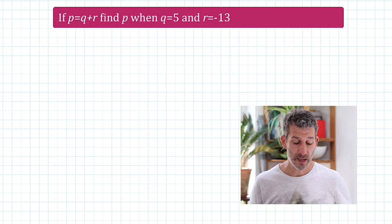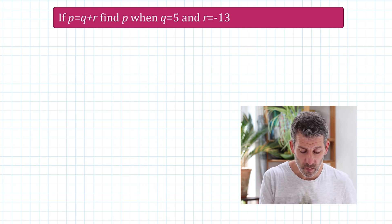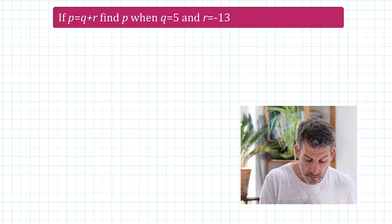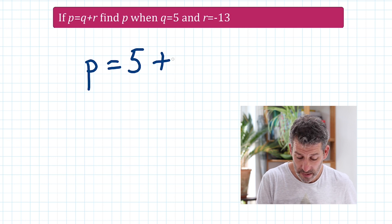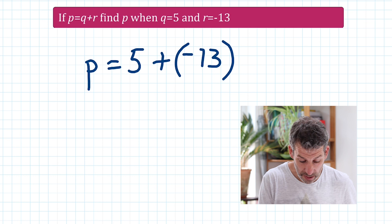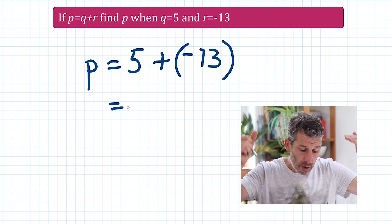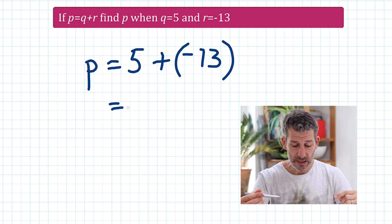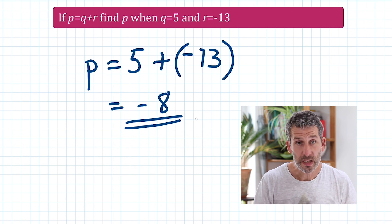If P equals Q plus R, find P when Q equals 5 and R is equal to negative 13. Right, we've got our little formula. All we're going to do is replace the letters that we've been given there, the Q and the R, with the actual numbers that we're told that they are worth. So P is equal to Q, well, Q is 5, plus R. R is negative 13. So 5 add negative 13. I'm going to put my negative 13 in brackets. I don't have to. It's just a good habit that I've got into. So 5 add negative 13. Well, when you're adding a negative number, you're moving down the number line. So I've got to move down 13 places from 5. Well, if I move down 5 places, that gets me to 0. And then I've got to move down another 8 places. So that will take me down to negative 8. So P is equal to negative 8.